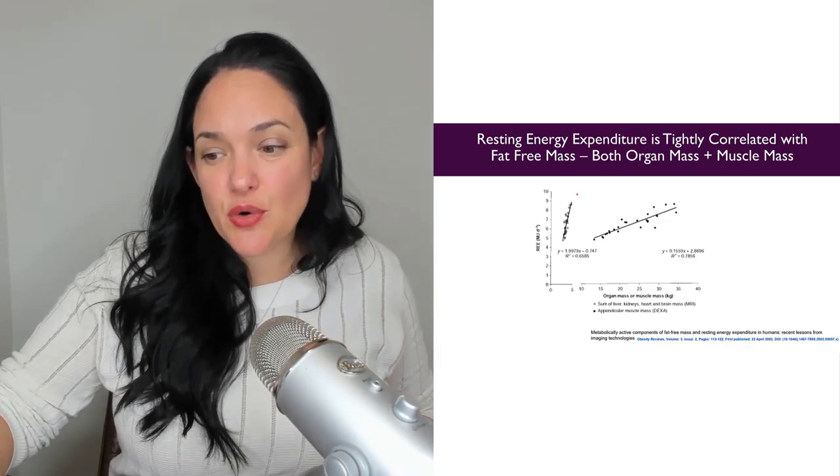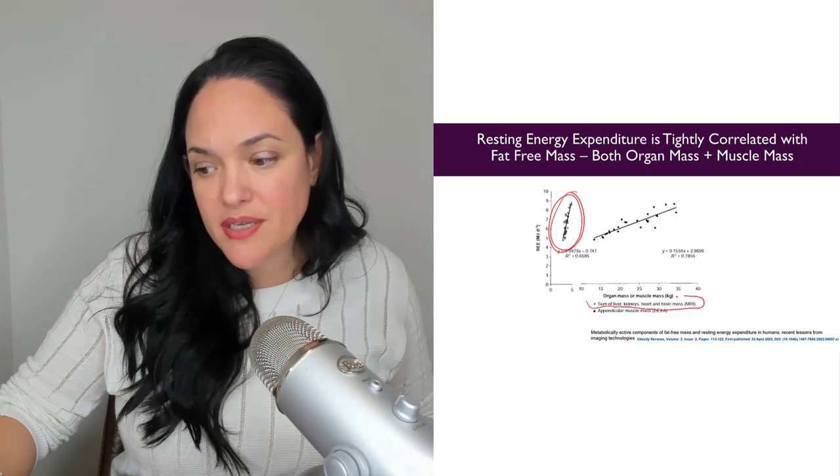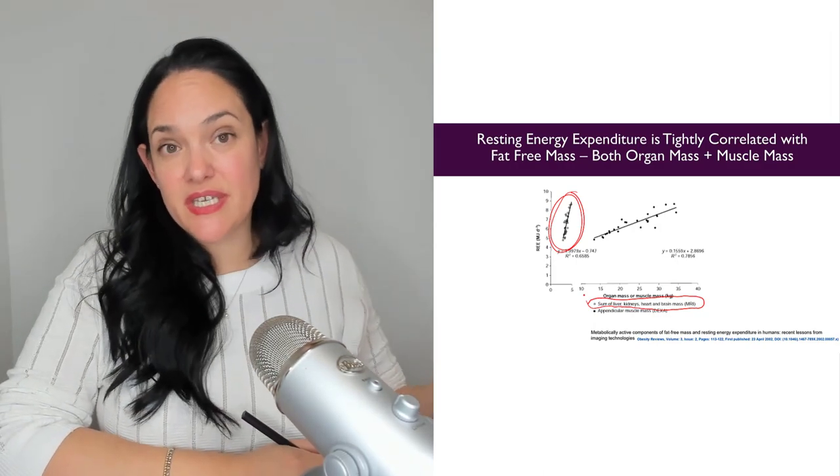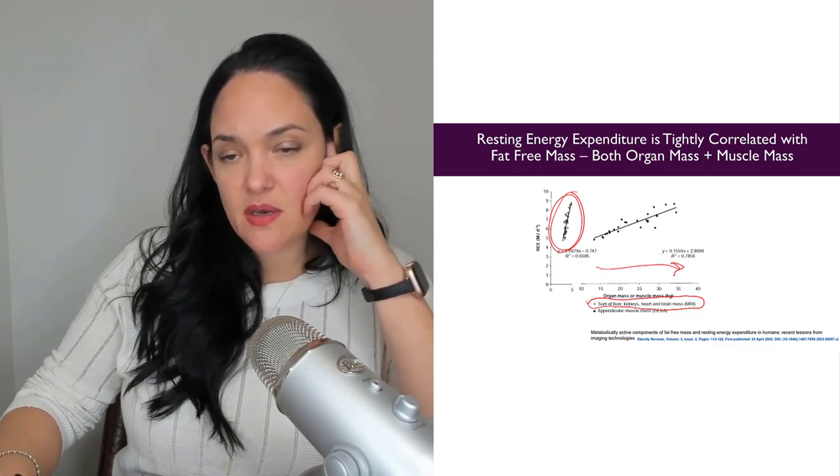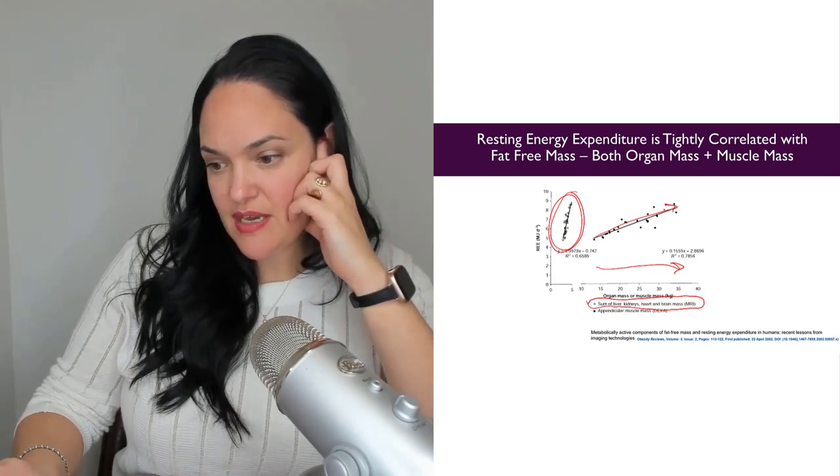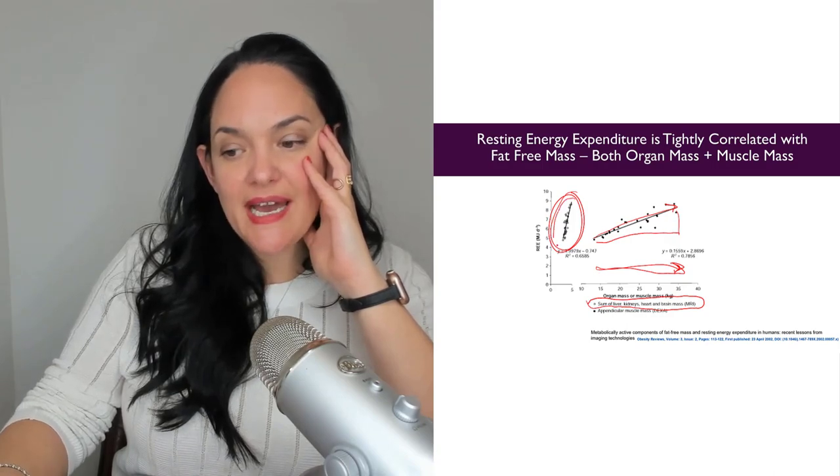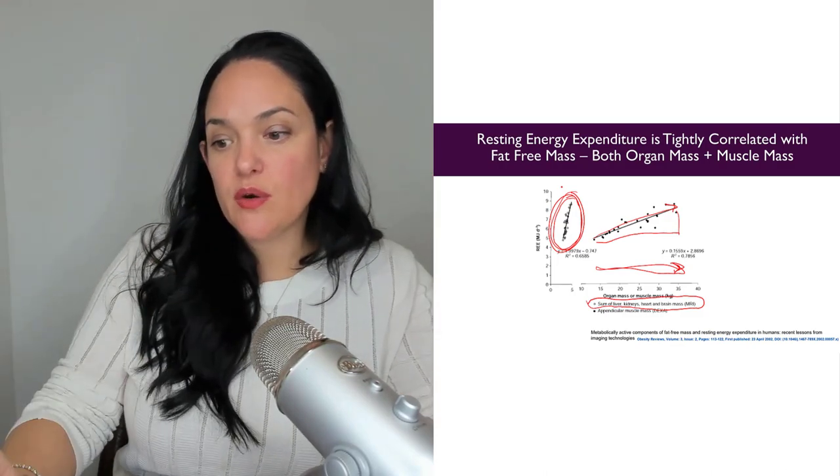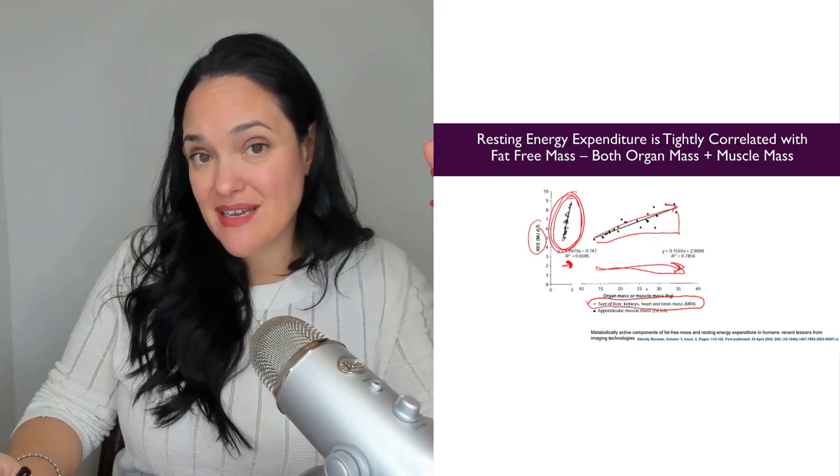But quite honestly, the majority of what determines our RMR actually is basically the output, the functioning and how metabolically active non-muscle tissues are, non-muscle lean tissues are, like the liver, the kidneys, the heart and the brain. Yes, increasing muscle mass will increase energy expenditure. That's typically a good thing. But you have to increase it quite a bit to see significant changes. Whereas we notice if we measure out the differences in the non-muscle lean body mass, we notice huge increases in resting energy expenditure over small increases in the mass of those structures.